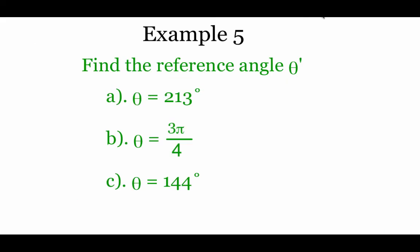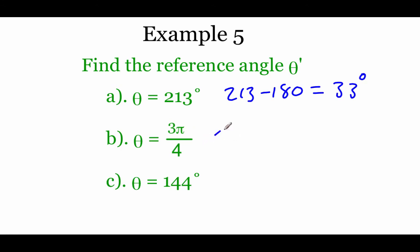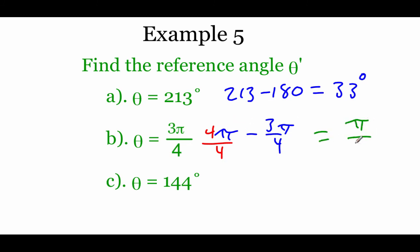For the reference angle examples: 213 degrees is in the third quadrant, so 213 minus 180 gives a reference angle of 33 degrees. For 3 pi over 4, which is in the second quadrant, we do pi minus 3 pi over 4: converting pi to 4 pi over 4 and subtracting gives pi over 4. For 144 degrees in the second quadrant, 180 minus 144 gives a reference angle of 36 degrees.